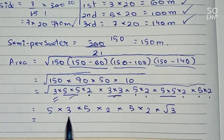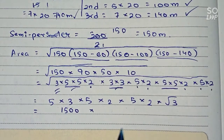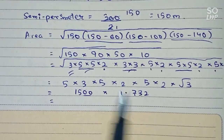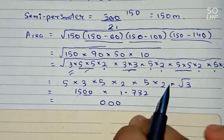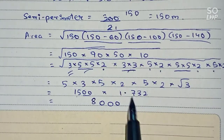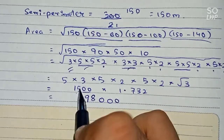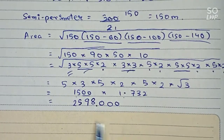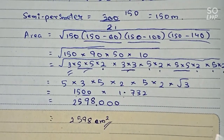After pairing, the value outside the root becomes 5 × 3 × 5 × 2 × 5 × 2 = 1500, multiplied by root 3. Taking root 3 as 1.732, we calculate 1500 × 1.732. Working through the multiplication: 15 × 2 = 30 (carry 3), 15 × 3 + 3 = 48 (carry 4), 15 × 7 + 4 = 109, 15 × 1 + 10 = 25. The final area equals 2598 meter square.